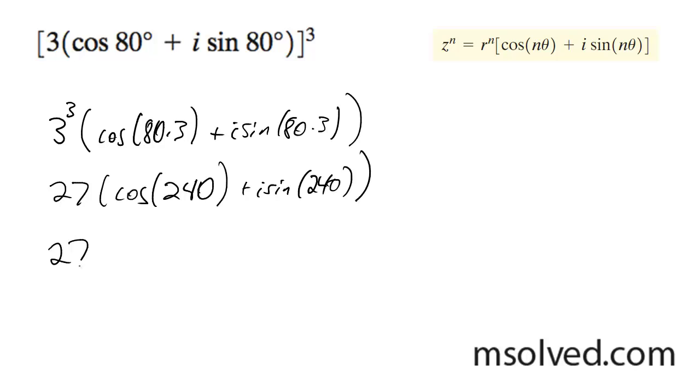So we get 27, and then the cosine of 240. Now 240 is 30 degrees shy of 270, which is 3π over 2. So this is going to be negative 1/2.